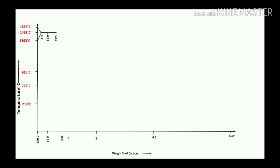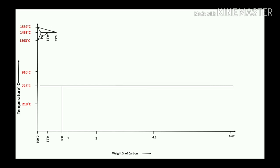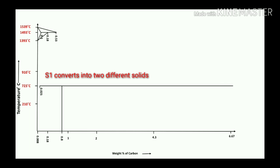The maximum temperature range for the peritectic region is from 1393°C to 1593°C. The second main important point is the eutectoid point, representing 0.8% carbon and 723°C temperature. According to the solubility of carbon at the eutectoid temperature of 723°C, the maximum range is 910°C to 210°C.